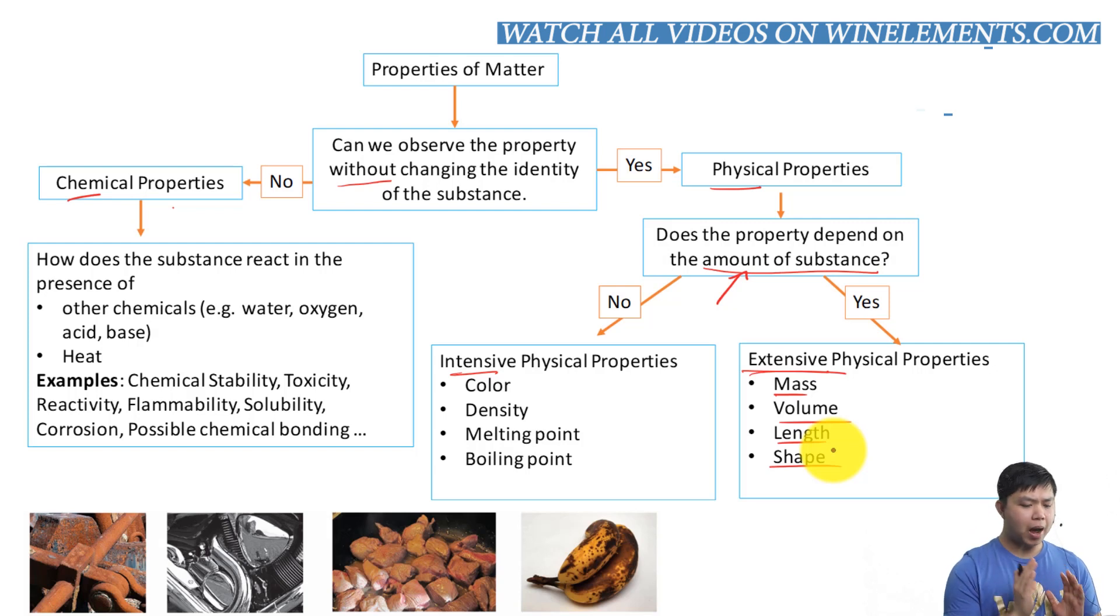Water will always boil at 100 degrees Celsius and freeze at 0 degrees Celsius. And that is physical properties. So let's go back and look at chemical properties. Chemical properties, a lot of times when we observe chemical properties, the substance changes into a different substance. We want to ask ourselves this question all the time when we look at chemical properties: Does the substance react in the presence of, for example, other chemicals like water, oxygen? For example, iron is a common metal that will form rust in the presence of oxygen. And then most metals would react with acid to produce hydrogen gas.